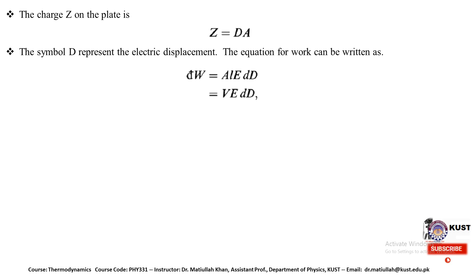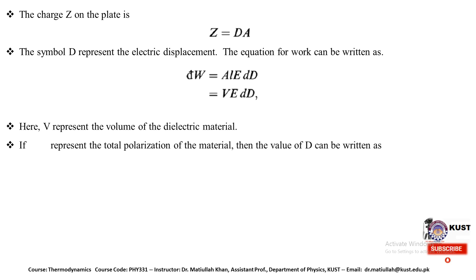Here V represents the volume of the dielectric material, which is the product of area A multiplied by the separation L between the plates of the capacitor. So V equal to A·L. With V equal to A·L, E and dD in place, the work equation becomes DW equal to V·E·dD.